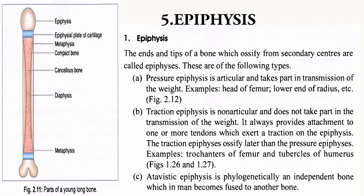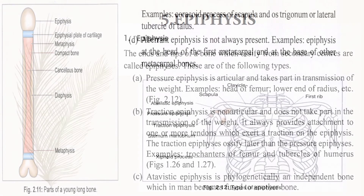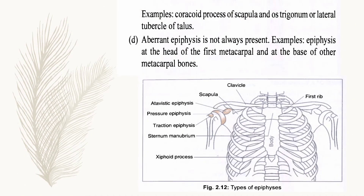The next question is epiphysis. The ends and tip of a bone which ossify from secondary centers are called epiphysis. Types of epiphysis: pressure epiphysis takes part in weight transmission, example — head of femur; traction epiphysis does not transmit weight but provides tendon attachment, example — tubercle of humerus; atavistic epiphysis is phylogenetically an independent bone fused to another, example — coracoid process of scapula; aberrant epiphysis is not usually present. You can draw the diagram shown here and mark the types.